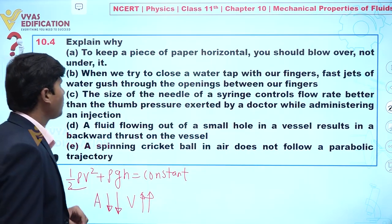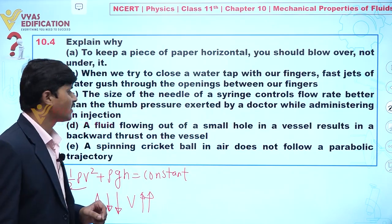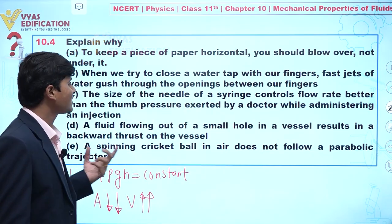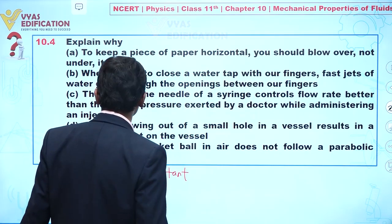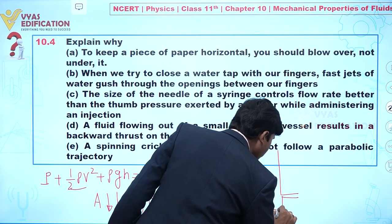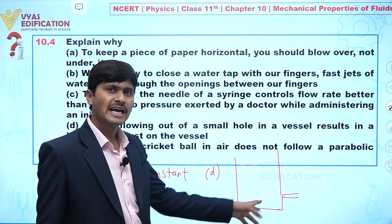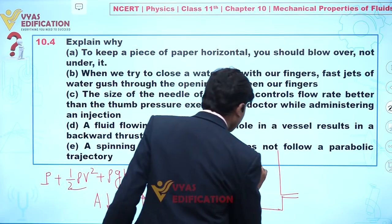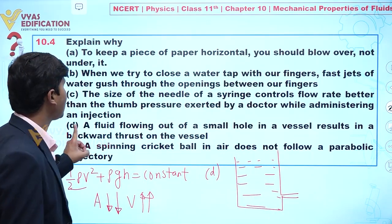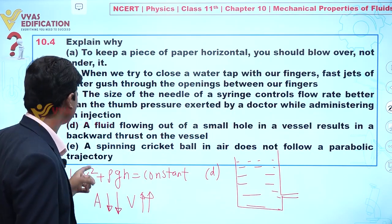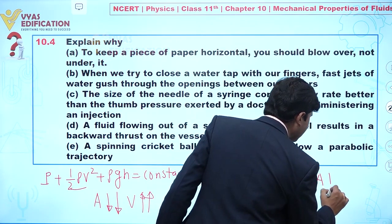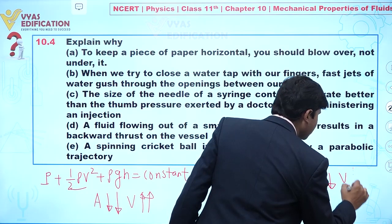For part (d): a fluid flowing out of a small hole in a vessel results in a backward thrust on the vessel. Let's suppose we have a container with a very small opening. We fill liquid up to a certain level. When liquid flows out of this small hole, the area is less.